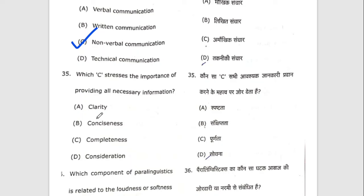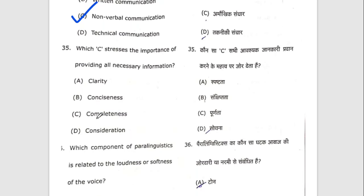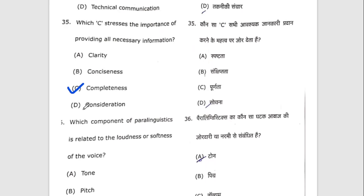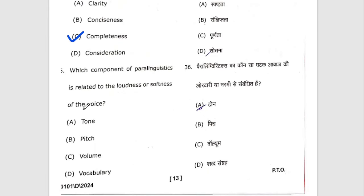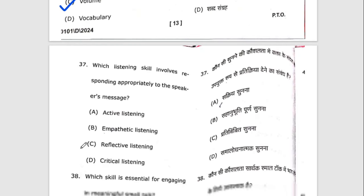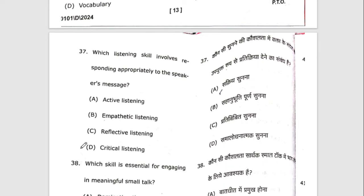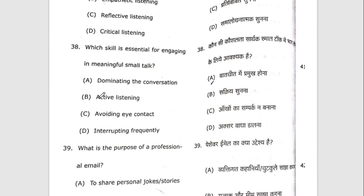Thirty-fifth question: which C stresses the importance of providing all necessary information? The right option is C — completeness. Thirty-sixth question: which component of paralinguistics is related to the loudness or softness of the voice? The right option is C — volume. Thirty-seventh question: which listening skill involves responding appropriately to the speaker's message? The right option is active listening. Thirty-eighth question: which skill is essential for engaging in meaningful small talk? The right option is B — active listening.